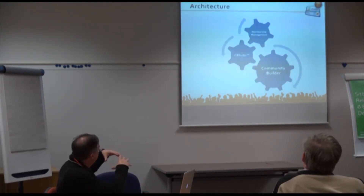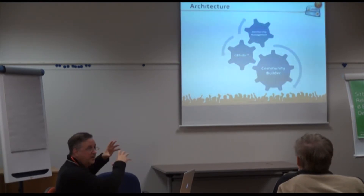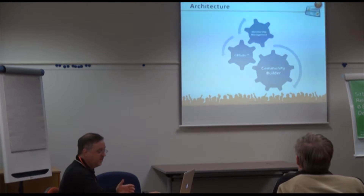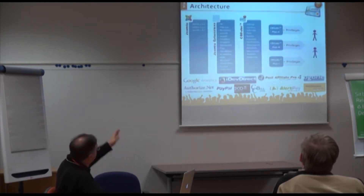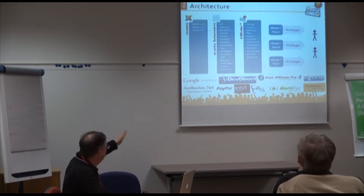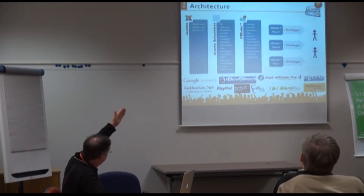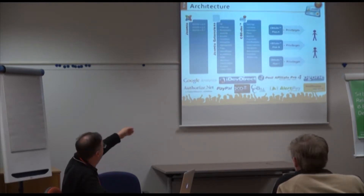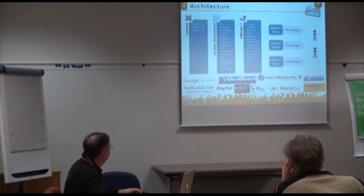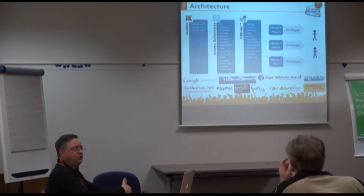The architecture is that CB Subs is a system working within the Community Builder framework using plugins and triggers. It supports Joomla 1.0 through 3.1. It integrates with many Joomla extensions internally, has multiple payment gateways, and with each plan you can give specific privileges to subscribers.